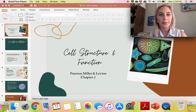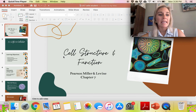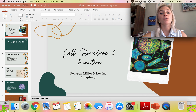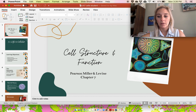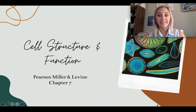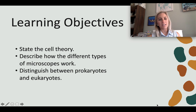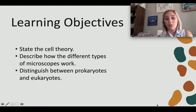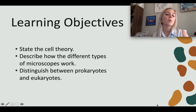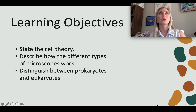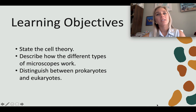We're looking at chapter 7 in the Pearson biology book: cell structure and function. I've split this chapter into different sections. Section one covers the life of cellular organisms — each organism is made up of small units called cells. Until the invention of the microscope, scientists didn't know that all organisms are made up of cells. For the first section, we need to state the cell theory, look at different types of microscopes, and distinguish between prokaryotes and eukaryotes.